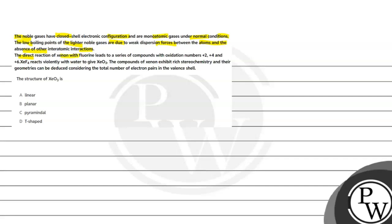The direct reaction of xenon with fluorine leads to a series of compounds with oxidation numbers of +2, +4, and +6.